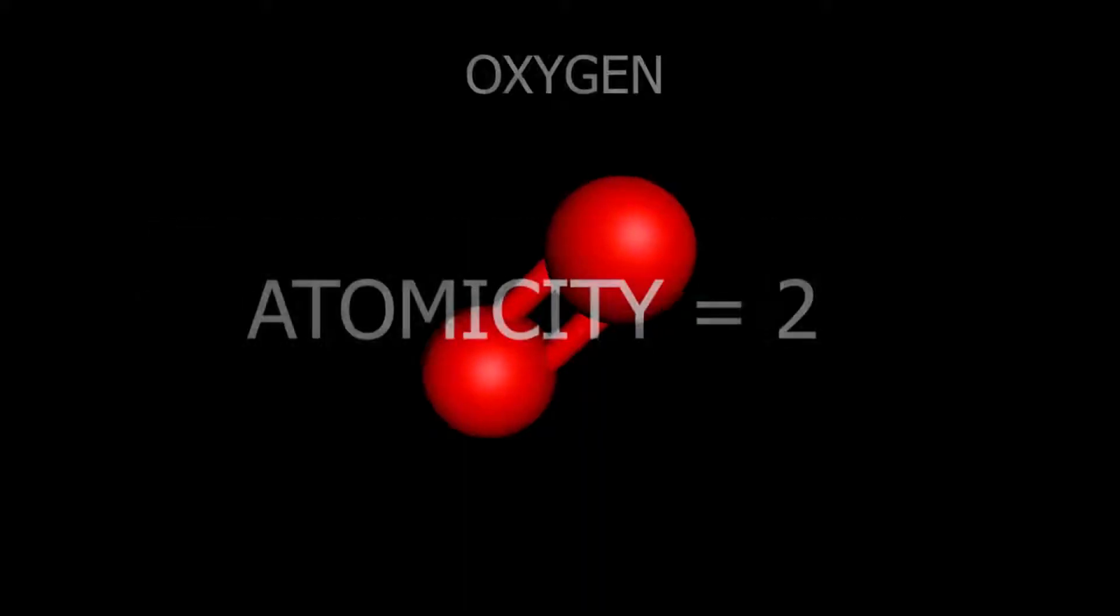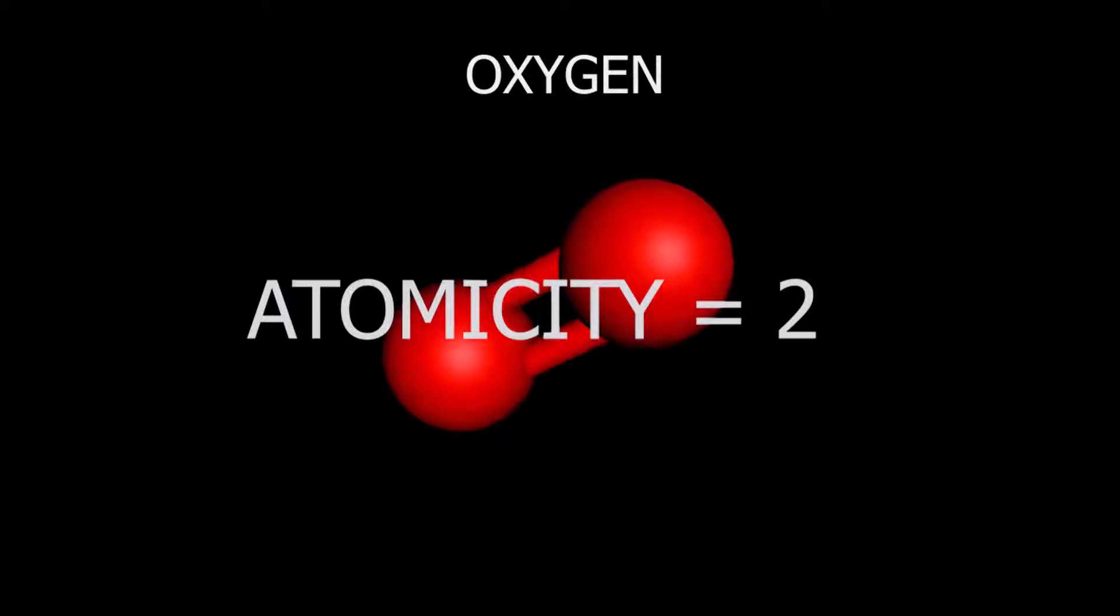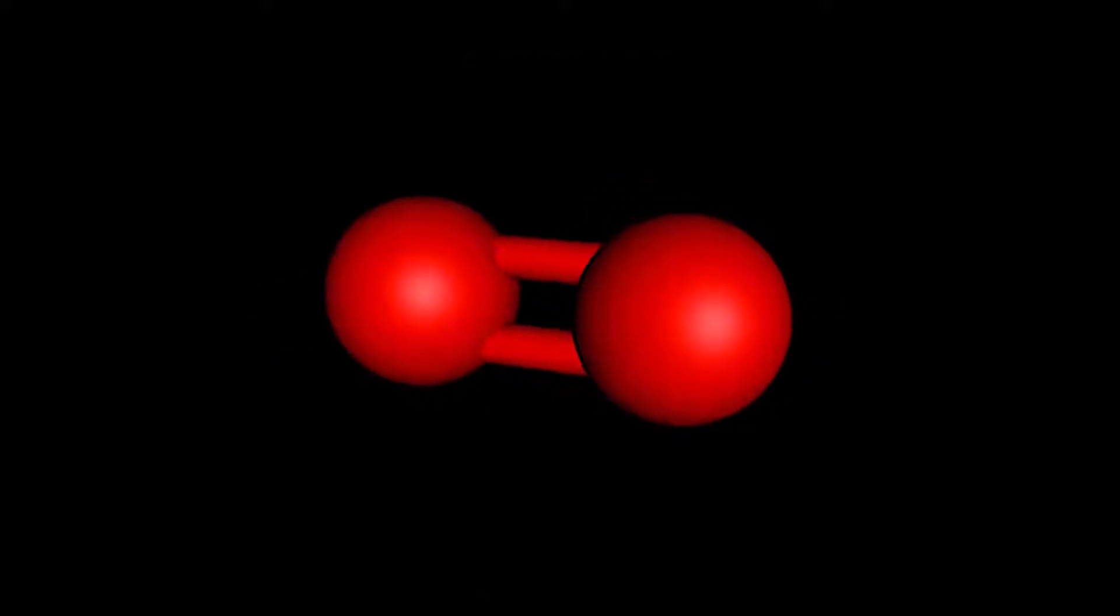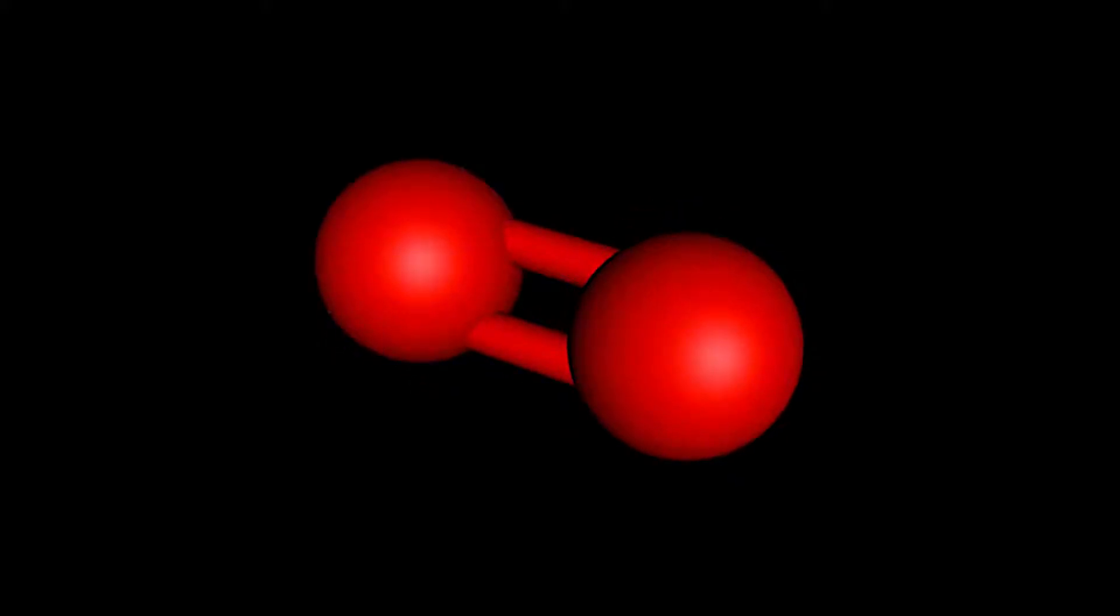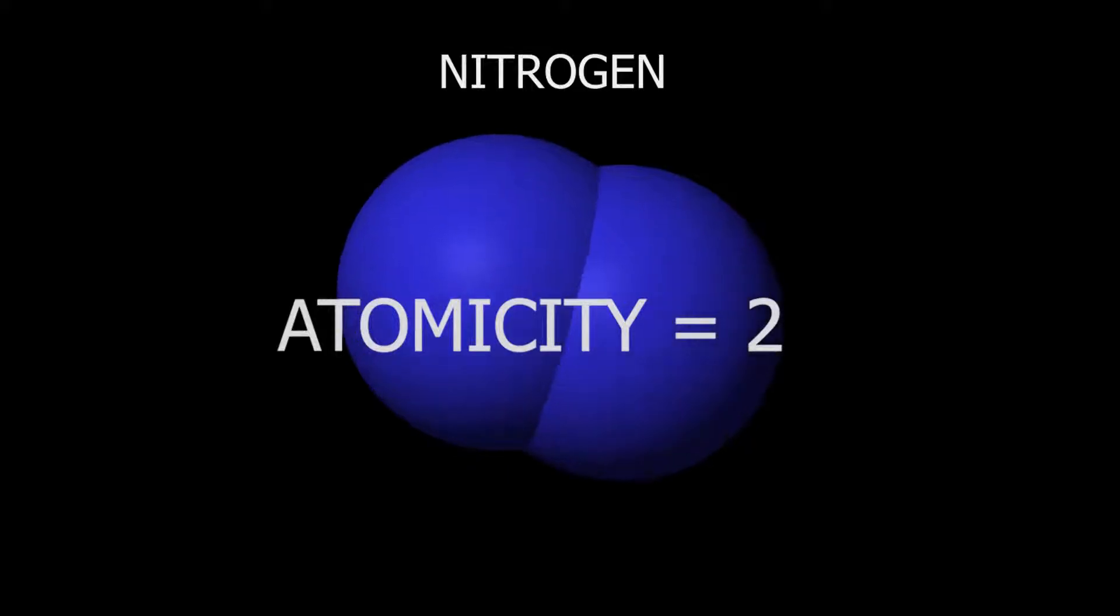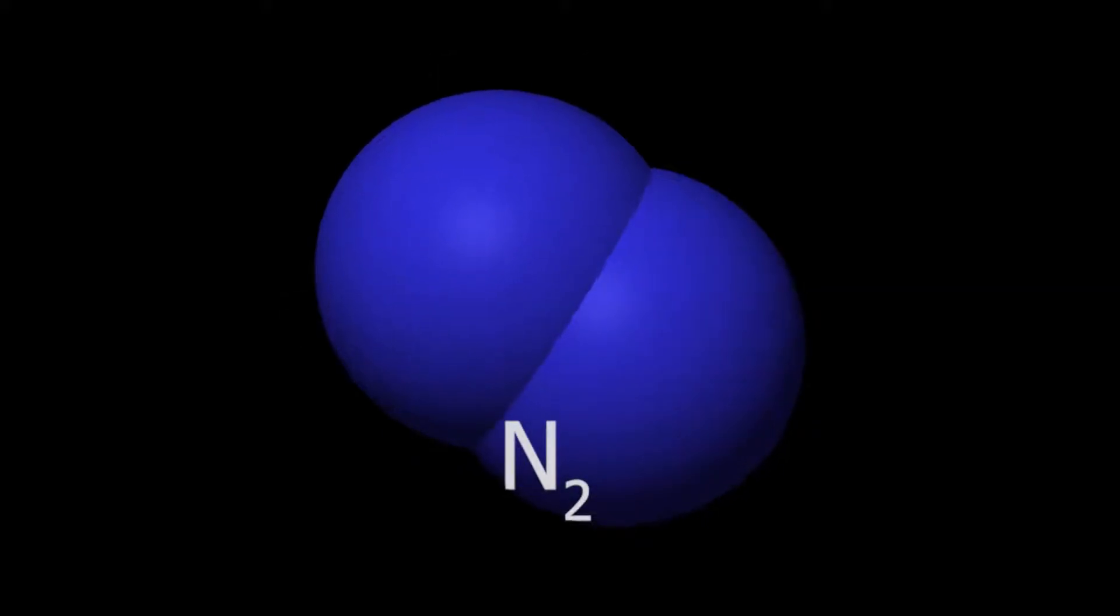Generally in nature, various elements exist as molecules of elements. For example, atomicity of oxygen element is 2 because oxygen element exists as molecule of element. Atomicity of nitrogen element is 2 as it exists as N2 in nature.